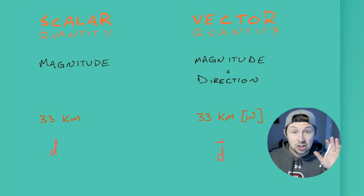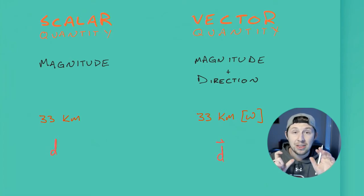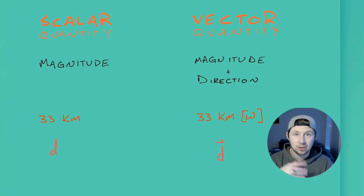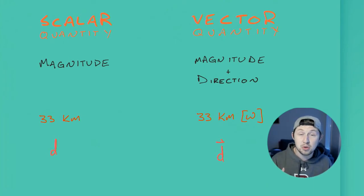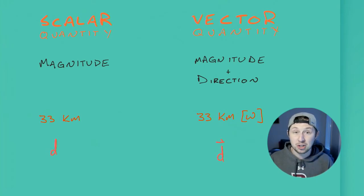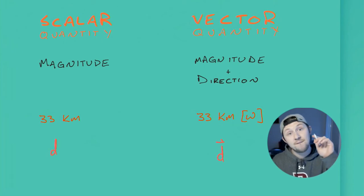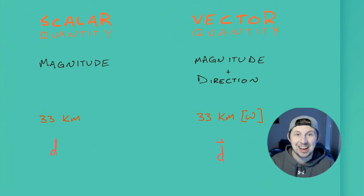This doesn't have to just be with distance traveled. We can do this with speed and velocity — scalar versus vector. Over the next couple of videos, we're going to talk about the differences between these two and look at it in a couple of different ways. Remember: scalar is just the magnitude, and vector is magnitude plus a direction. Let's go ahead and try these out.